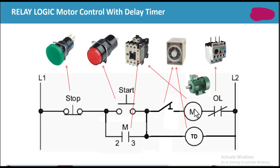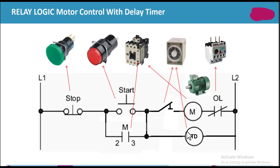This overload relay is a protective device used to protect the motor from burning. In this process you can use different kinds of switches in the relay logic motor control with delay timer. This delay timer provides a specific delay before starting the motor — for example, a two-minute delay means the motor will start after two minutes, or a 50-second delay means the motor will start after 50 seconds.